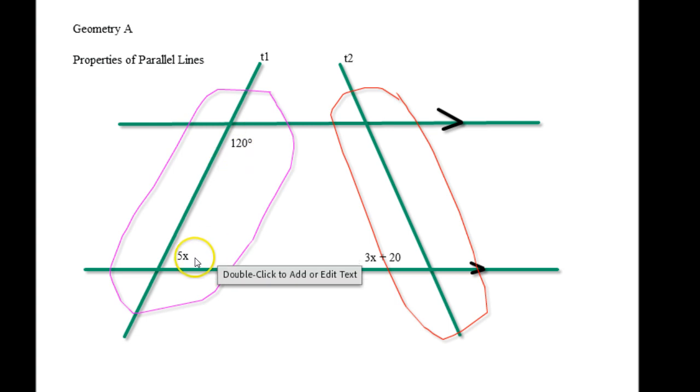You know a couple of things about this. The 120 and the 5x, they are same side interior, so you know that they both add up to 180. So set up your equation, 5x plus 120 equals 180. So that's pretty simple. So you minus 120 from both, you get 5x equals 60. And then if you divide both sides by 5, you're going to get x equals 12.